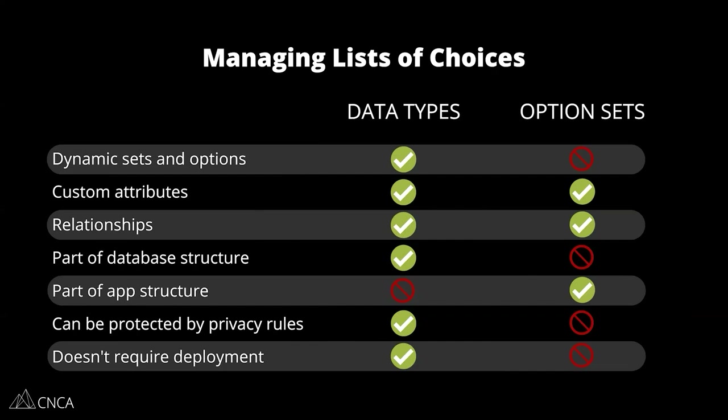Here we have a quick table that's going to break down the most important differences you need to understand between data types and option sets when it comes to managing lists of choices. Remember, option sets are specifically for this, whereas data types can let you do this, but it's also the rest of your data structure — not just lists of choices, it's everything else that you're saving to your database. So let's take a look one by one through each of these pros and cons, the capabilities that they have.